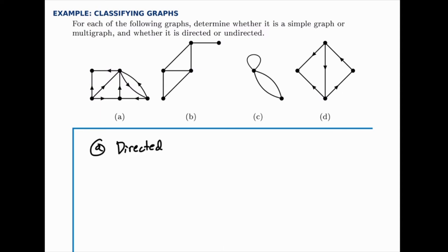So for A, that's directed. B and C are both undirected. And D is directed. Then we turn to the question of simple graphs versus multigraphs.